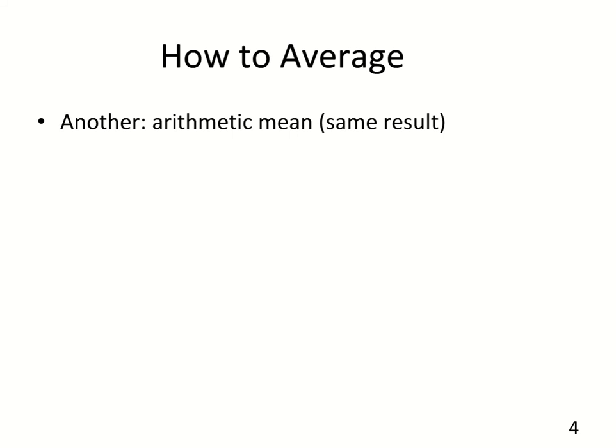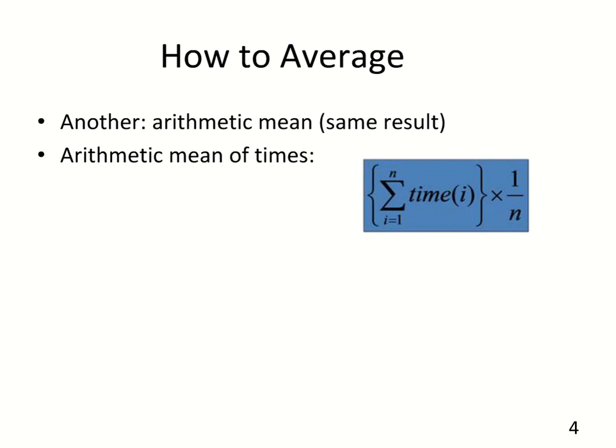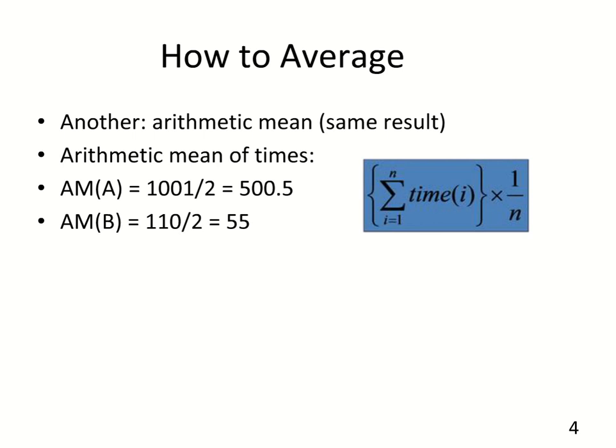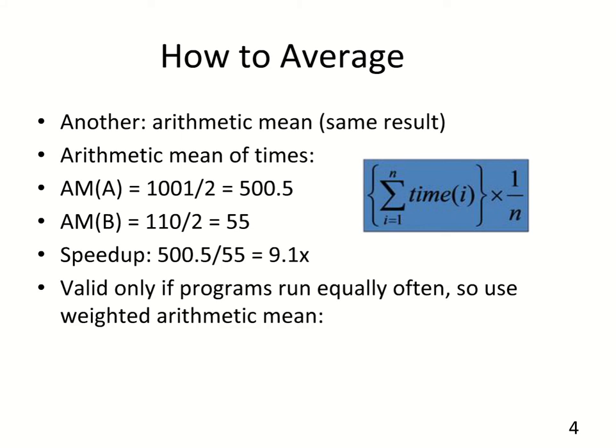An alternative way is to think of it as the arithmetic mean, which gives the same result. The arithmetic mean of times is defined as the sum of all individual benchmark times divided by the number of benchmarks. The arithmetic mean for machine A is 1001 divided by 2, or 500.5. For machine B it's 110 divided by 2, or 55. Taking the ratio of the two arithmetic means gives us the same 9.1x speedup factor.